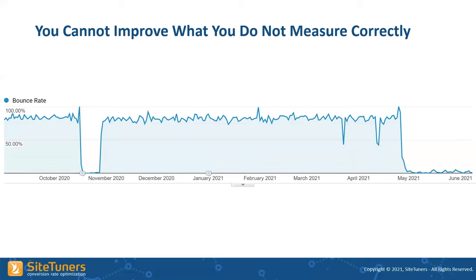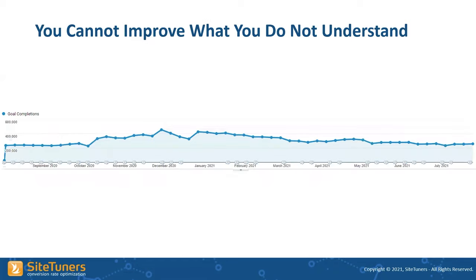There are other things that can throw off your bounce rate statistics. If you have a site where people can log in to track orders or access their account on the home page, you want to exclude those people from bounce rate reporting. When they log in, it's counting as another step in the process. Those people have a very different user intent — their logins are masking the real bounce rate for new visitors.